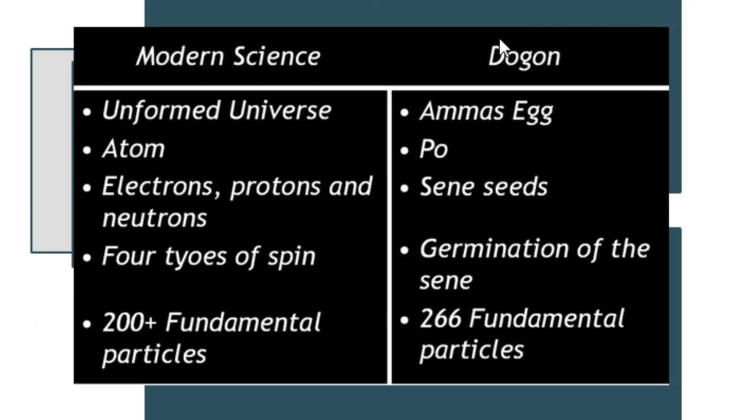When you look at modern science and the Dogon, modern science talks of unformed universe which is a mass egg, atom which is Po. The electrons, protons and neutrons are sene seeds. Four types of spin is germination of the sene. 200 plus fundamental particles. The Dogons have got 266 fundamental particles.